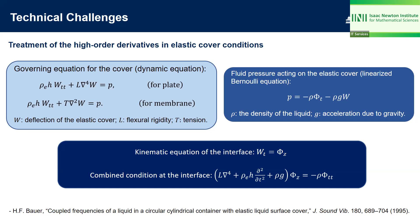The dynamic equations for plate and for membrane are displayed here. We can find that in the dynamic equation for a plate there exists a fourth-order mixed derivative of the deflection, while in the equation for membrane there is a second-order mixed derivative of the deflection. Here, L and T are respectively flexural rigidity and tension. On the right-hand side of these two equations, P is the fluid pressure acting on the elastic cover, which can be obtained by the linearized Bernoulli equation. The kinematic equation at this interface is given as W_t equals Phi_z. Using both of these two equations, we can eliminate W and obtain the combined condition at the interface.